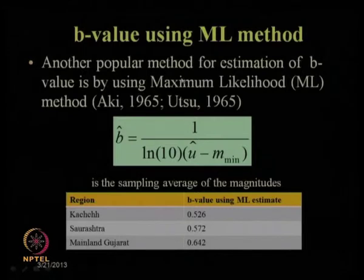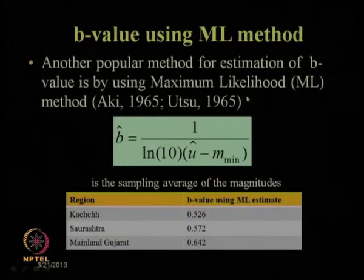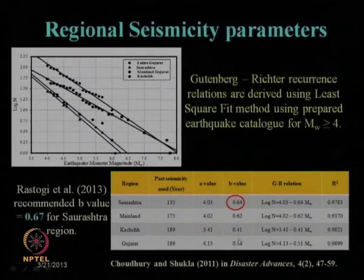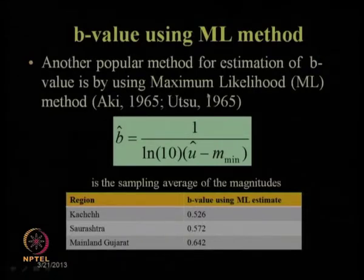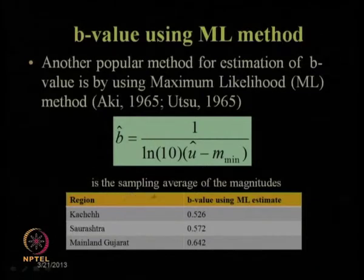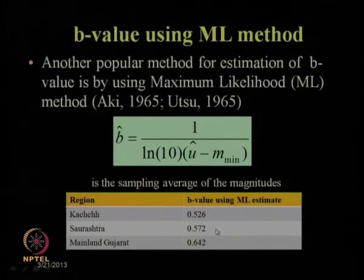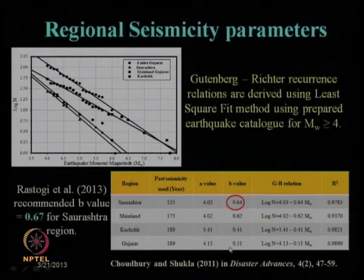Using another method — the maximum likelihood method proposed by Aki in 1965 and Utsu in 1965 — we can also estimate the B value. The equation depends on the sampling average of magnitude and the minimum threshold value. Region-specific B values from the maximum likelihood method are: Kach region 0.526, Saurashtra region 0.572, and mainland Gujarat 0.642. Maximum likelihood methods give higher B values compared to least squares method.